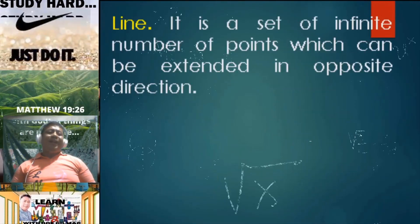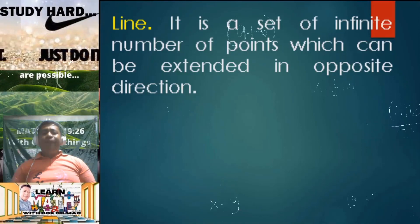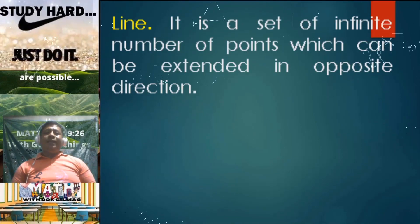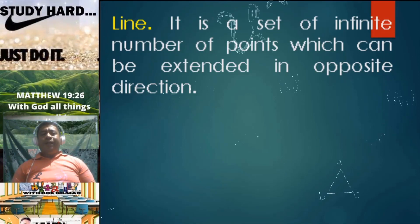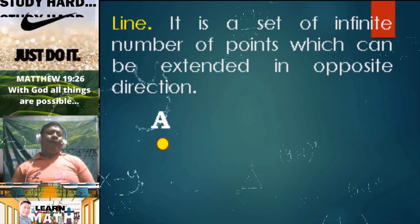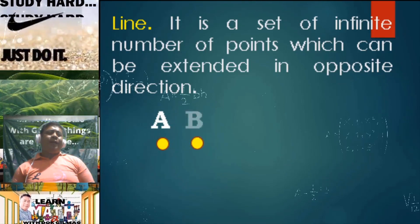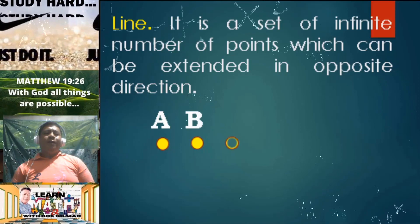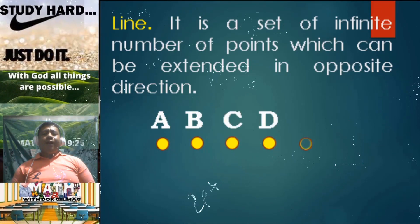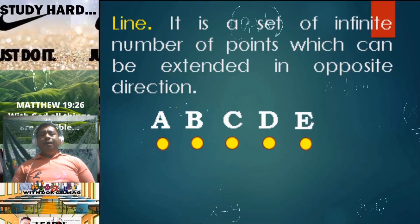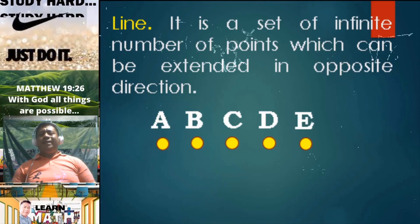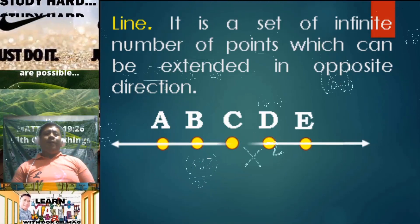Consider a line, which is a set of infinite number of points which can be extended in opposite directions. Consider the different points here: point A, point B, point C, point D, and point E. By connecting these given points — A, B, C, D, E — we form a line.